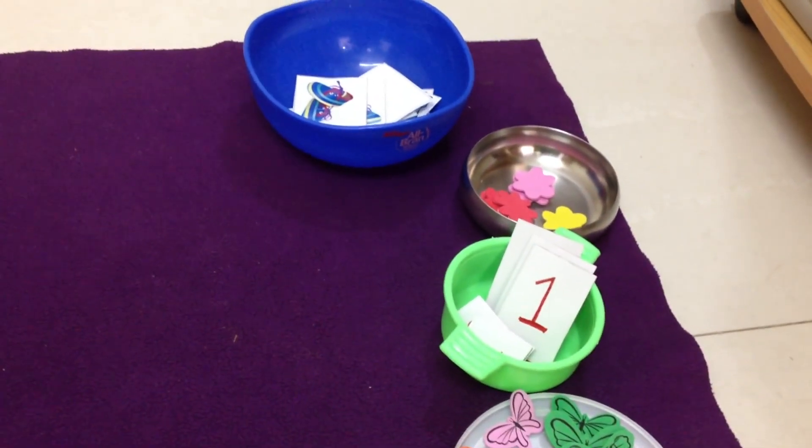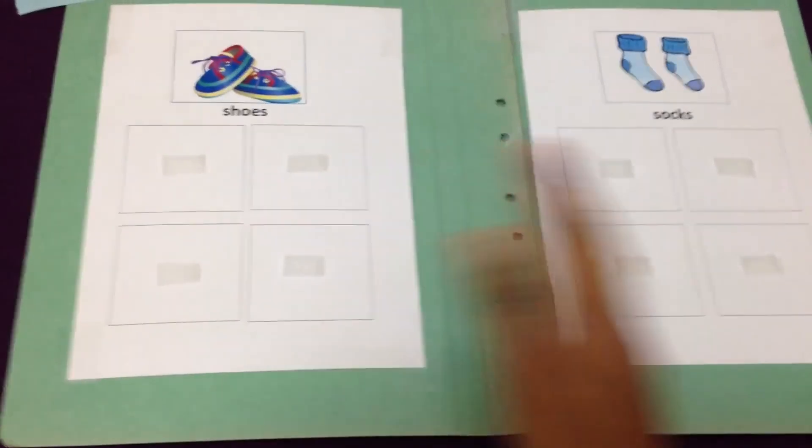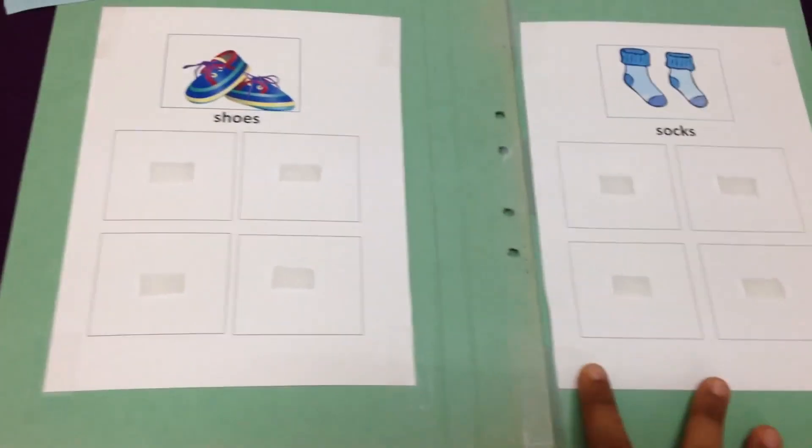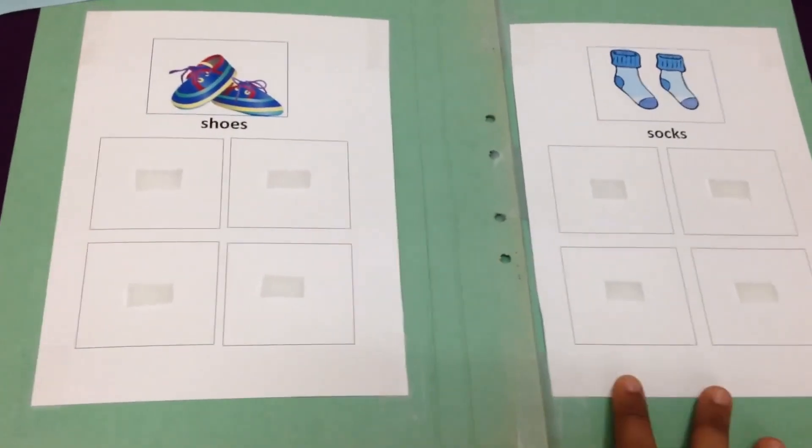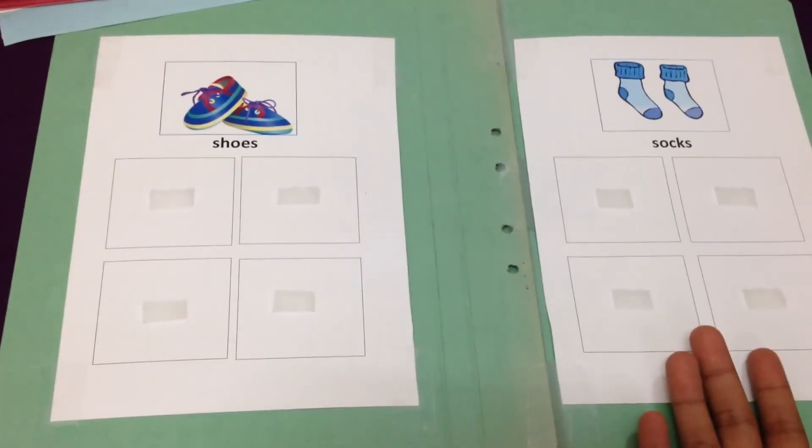First, we're going to start with a sorting activity. Before the child understands the concept of counting one, two, three, he needs to understand that there are objects and there are different variants to the objects. They need to first learn to sort the objects.